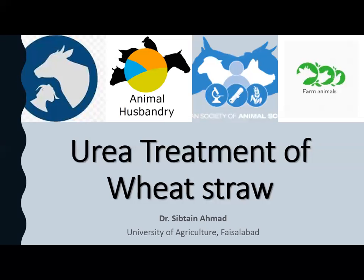Basically, wheat straw is a poor quality dry roughage given to cattle and buffalo as fillers, because the straw hardly has any feeding value. It is highly deficient in minerals, vitamins, and proteins. The DCP value for wheat straw is zero — there is no digestible crude protein — and the total digestible nutrients, TDN, is 48.3 percent.